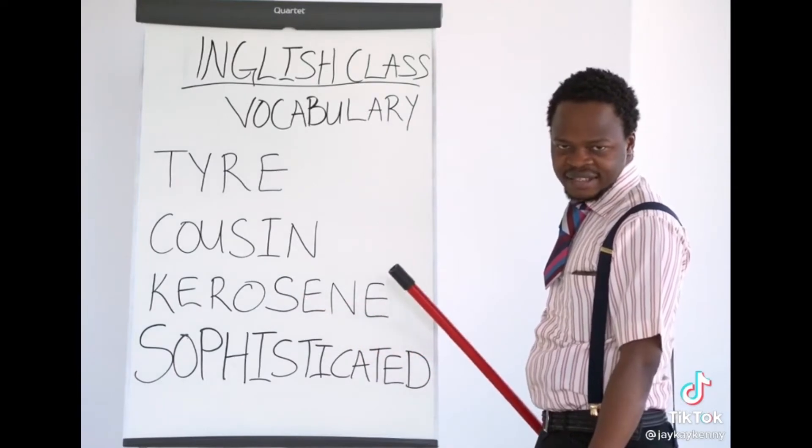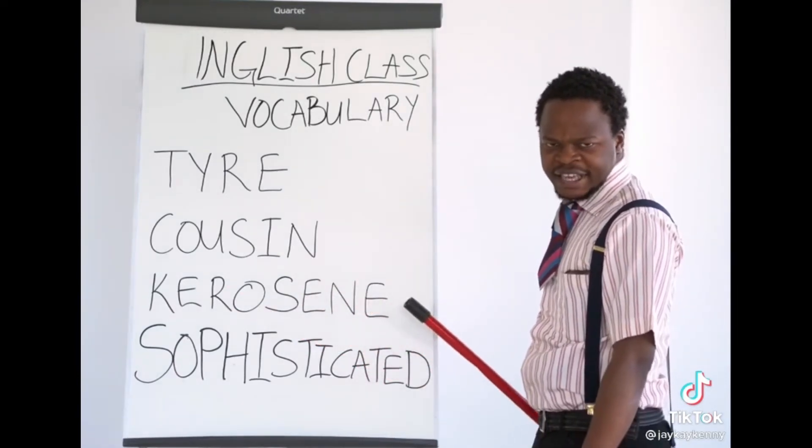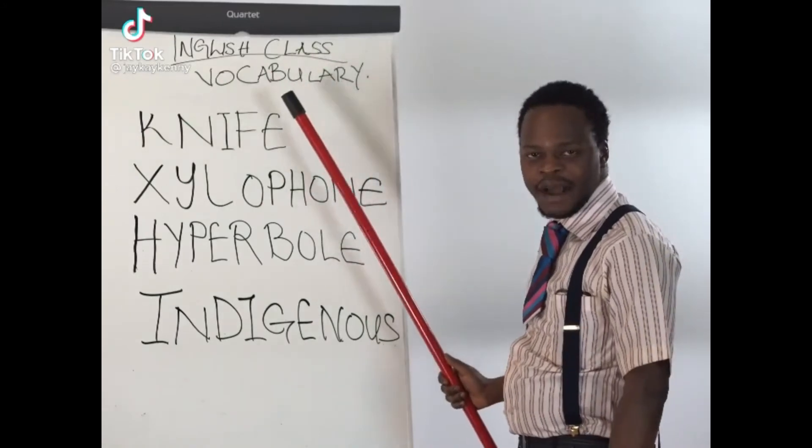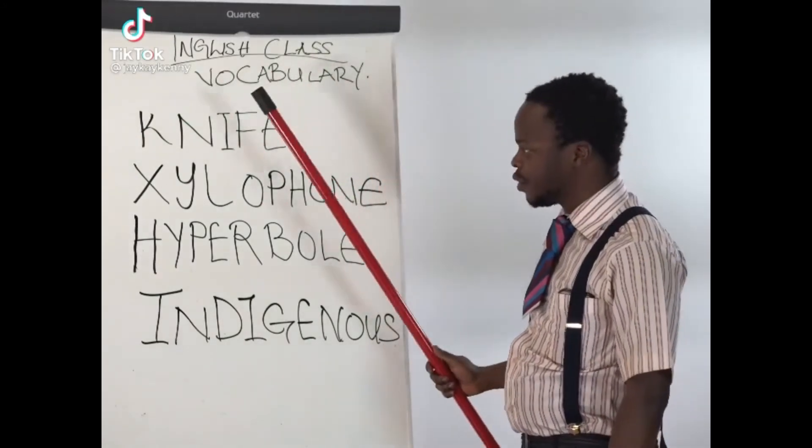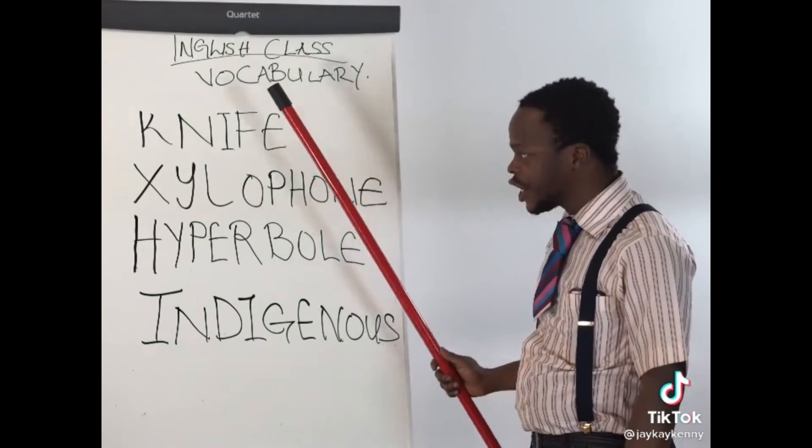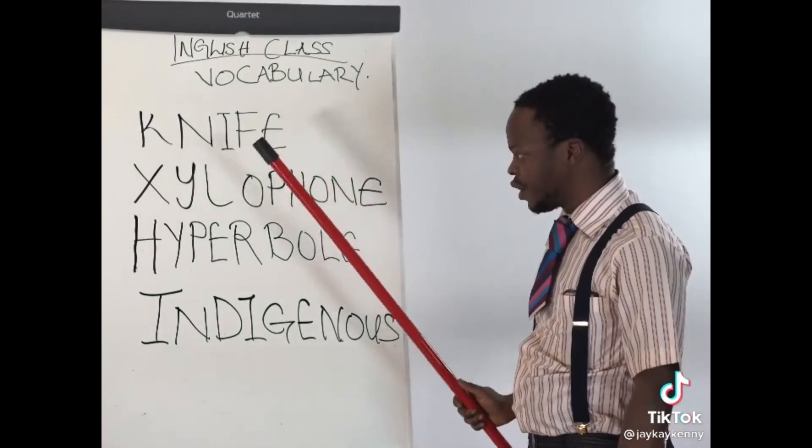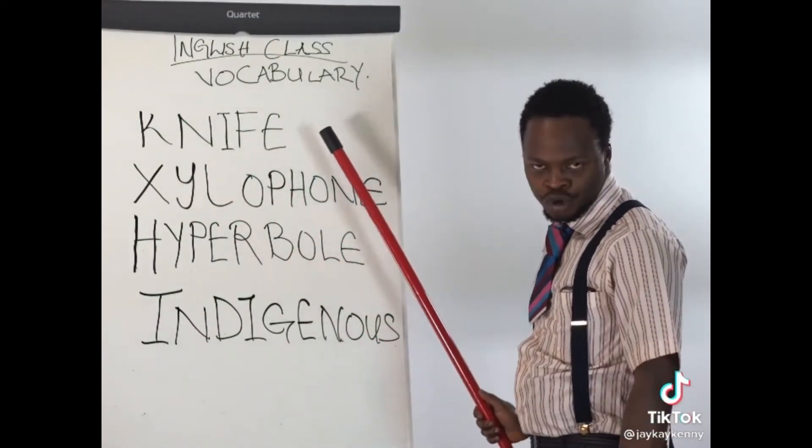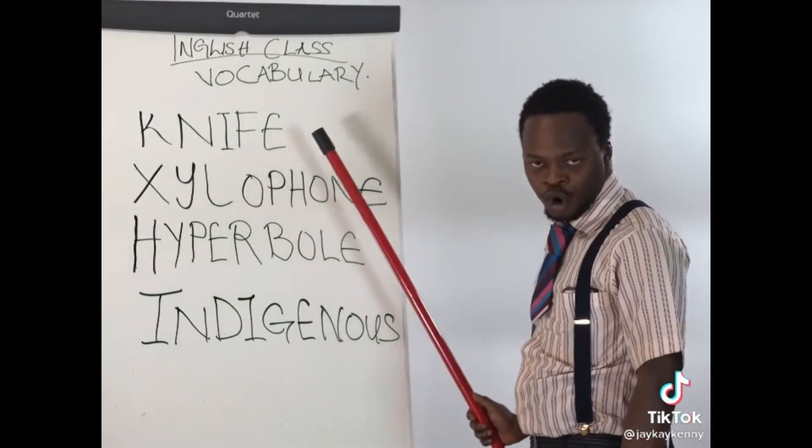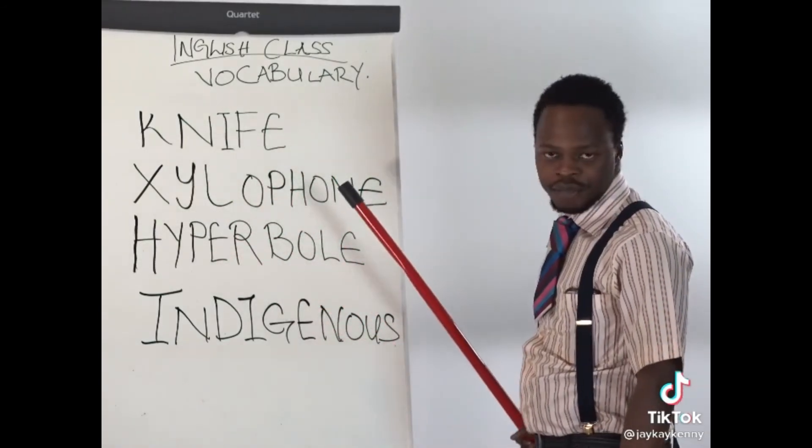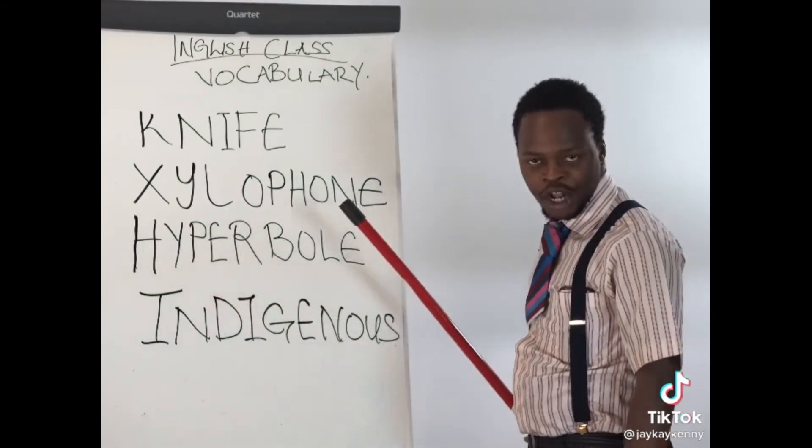Sophisticated, sophisticated. English class vocabulary. Knife, knife. Xylophone, xylophone. Hyperbole, hyperbole.